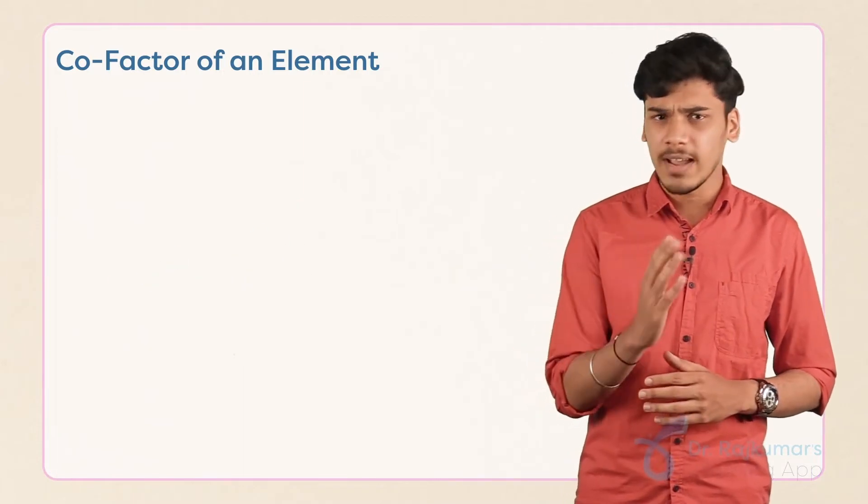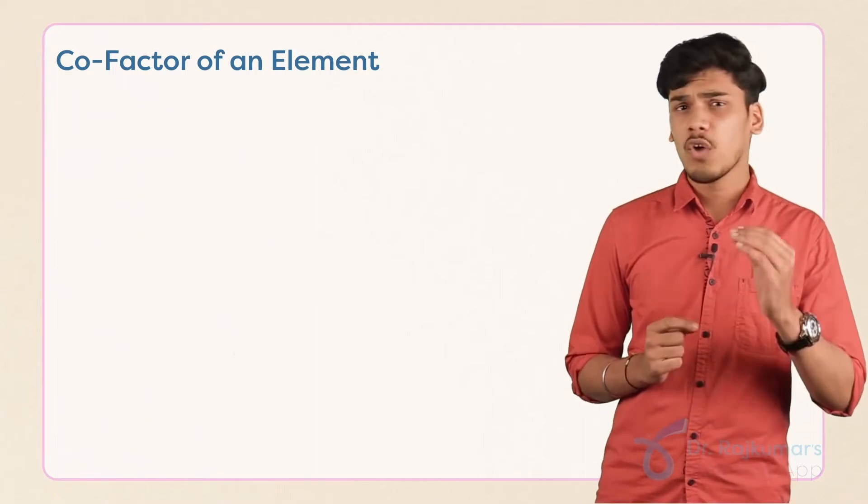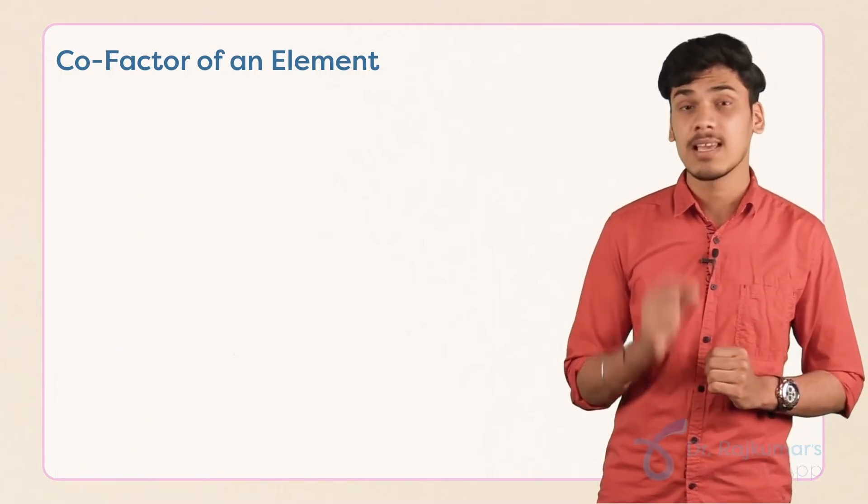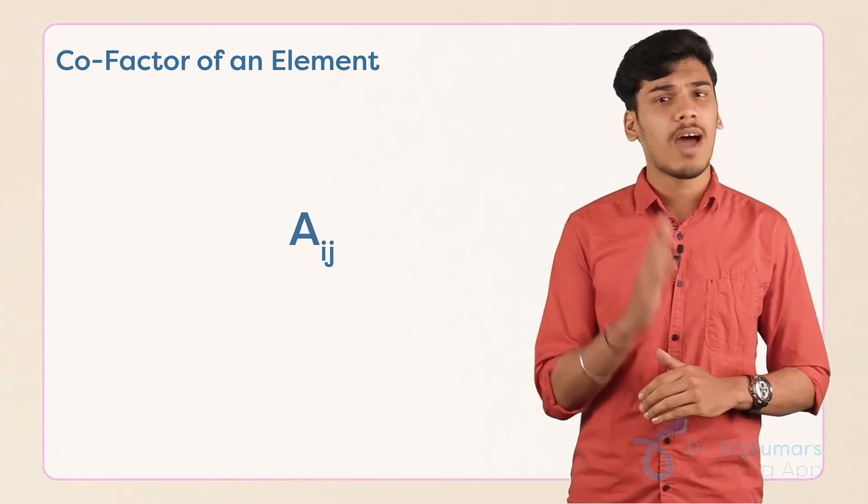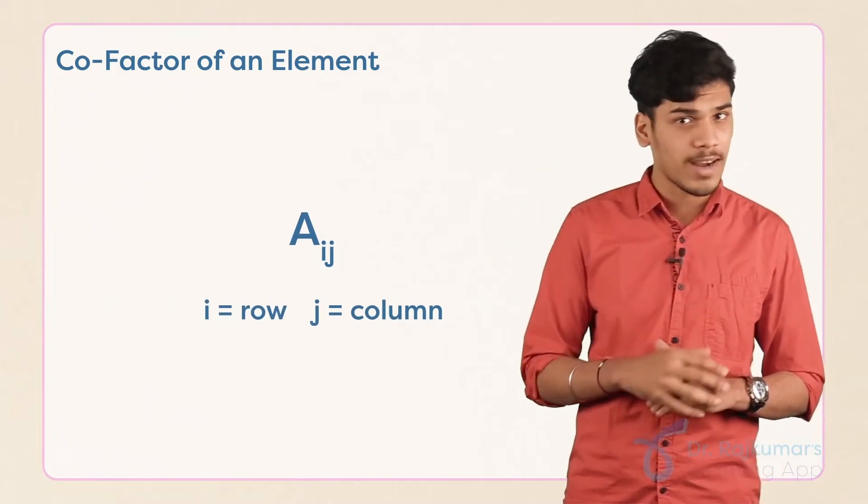So let us see how to find the cofactor of each and every element in a 2 cross 2 matrix. First and foremost, the cofactor of a matrix is represented as Aij where i and j represents the row and column number of the element of which you are finding the cofactor.